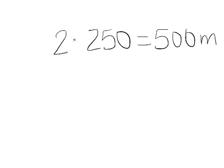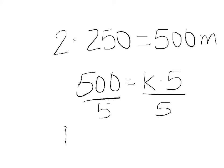So we are going to figure out what speed Brian should travel. So 500 equals k times 5. Now we are solving for k, so we are going to divide both sides by 5. Our k is going to be 100 meters per second.